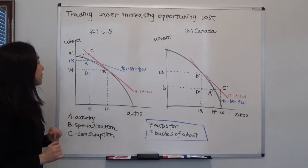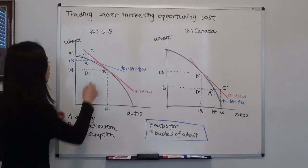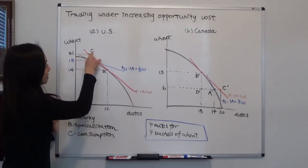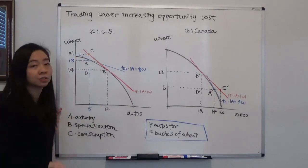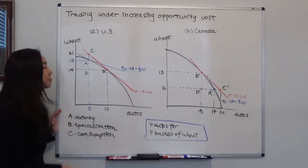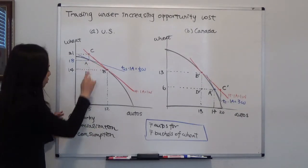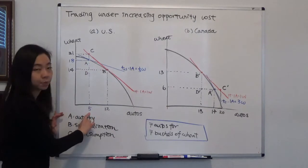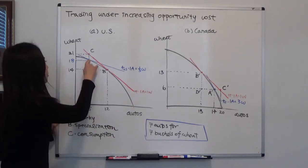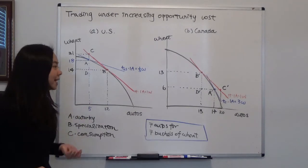Therefore, we eventually consume at point C. Notice that C is above A and outside of the production possibility curve, so we're doing better than before. Even though we have the same number of automobiles as in autarky, now we have more wheat to enjoy.